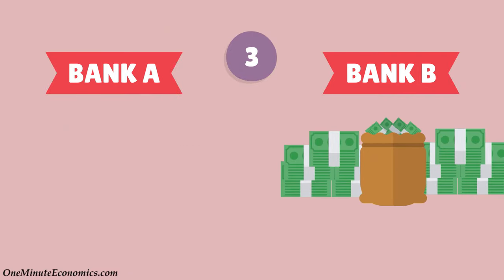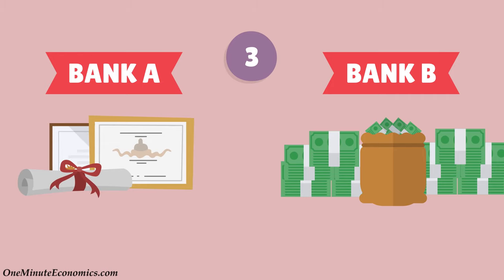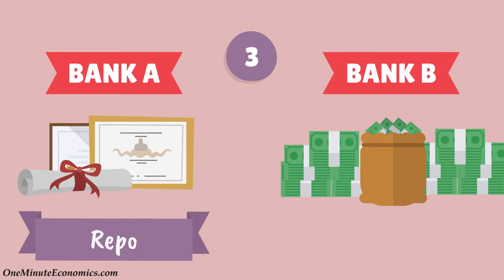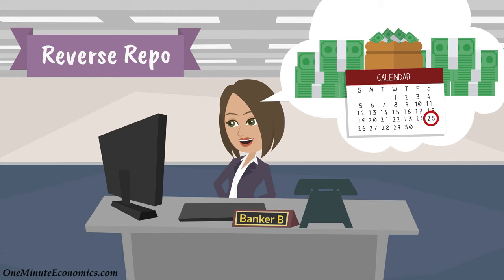When the time comes, Bank A buys the bonds back from Bank B at a higher price. In other words, Bank A received the cash it needed and Bank B made some money. From the perspective of Bank A, this was a repo. From the perspective of Bank B, which is on the other side of the trade, it was a reverse repo — buying securities from Bank A with the intention of selling them back at a profit later on.